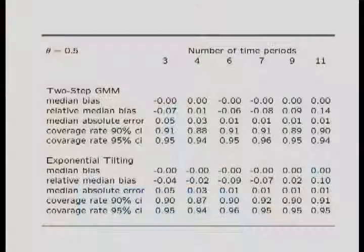I also varied the number of time periods to see how much things would deteriorate with the degree of over-identification. For the case where theta is 0.5, what you see is that these things don't make much difference. Both two-step GMM and the exponential tilting estimator both do very well. Coverage rates for the 90% and 95% confidence intervals are very close to nominal ones, and the median absolute error is very similar in both cases.